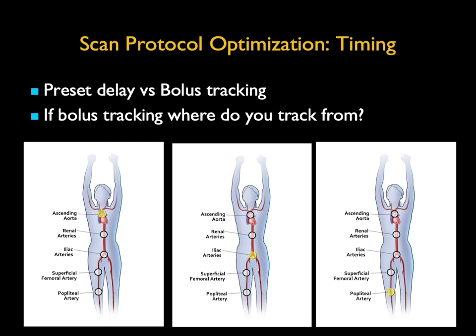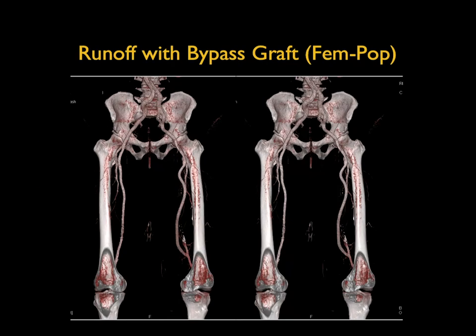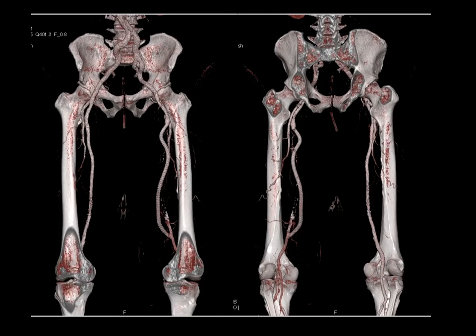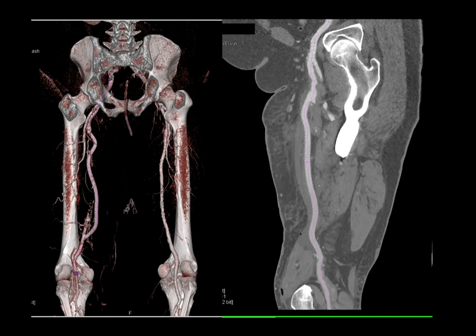One of the things you'll see in my cases is the importance of processing — vessel tracking, bone removal, and negative angio display are three key things. Here's a runoff study in a patient with a femoropopliteal bypass graft shown from a couple of different projections. I'm able to track along the vessel, so now I can see the graft, its proximal and distal anastomosis, and everything looks patent.